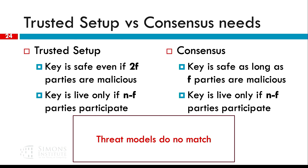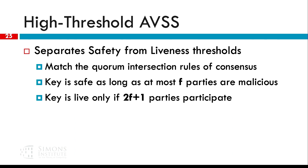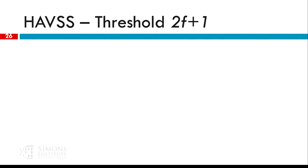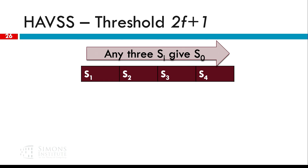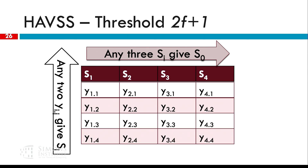This is what we take advantage of in order to increase the threshold. The idea is to separate the safety from the liveness thresholds of the protocol so that they match the quorums that consensus needs. The key will be safe only if at most f parties are malicious, and it will be live as long as 2f plus 1 honest parties participate — just like in consensus. How do we do it? We are going to use a two-dimensional secret sharing with a bivariate polynomial — not a symmetric one, but an asymmetric bivariate polynomial. In the first dimension, we put a high threshold, the 2f plus 1 threshold. In the second dimension, we secret share each secret share with a lower threshold.